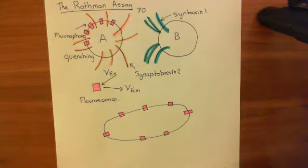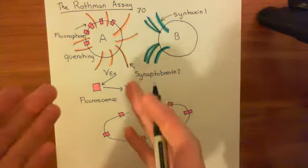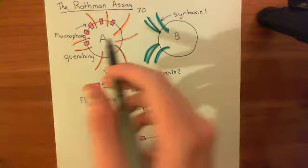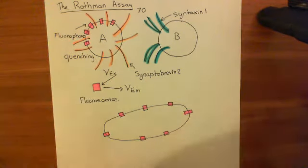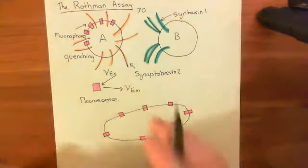Now, what we can now do is do more experiments. We can now put in synaptotagmin into this vesicle. Why not? Okay, and we can look to see if they fuse. So let's do that.